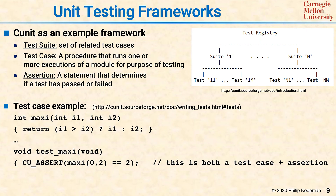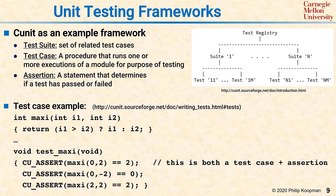CU_ASSERT, standing for CUnit Assert, is true if the logical relation is true and false if it's not. The test passes if it's true, the test fails if it's false. Here we assert that the max of 0 and 2 should be 2, the max of 0 and negative 2 should be 0, and the max of 2 and 2 should be 2.